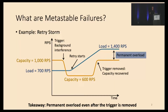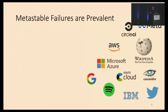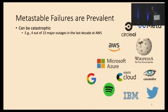A key takeaway is that metastable failures are a permanent overload, even after the triggers are removed. Metastable failures are quite prevalent and can lead to catastrophic events. For example, 4 out of 15 major outages in the last decade at AWS are due to metastable failures.